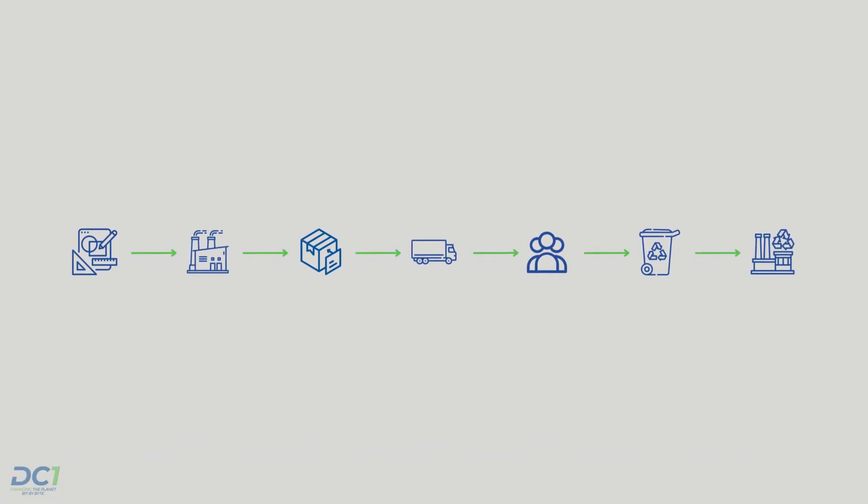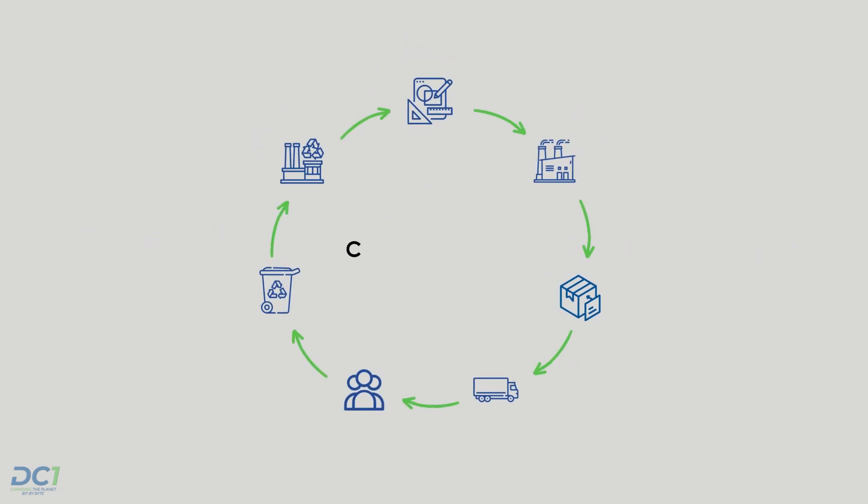The supply chain and overall product life cycle can be confusing and difficult to track. Data Company One aims to simplify this process and help create a circular economy.